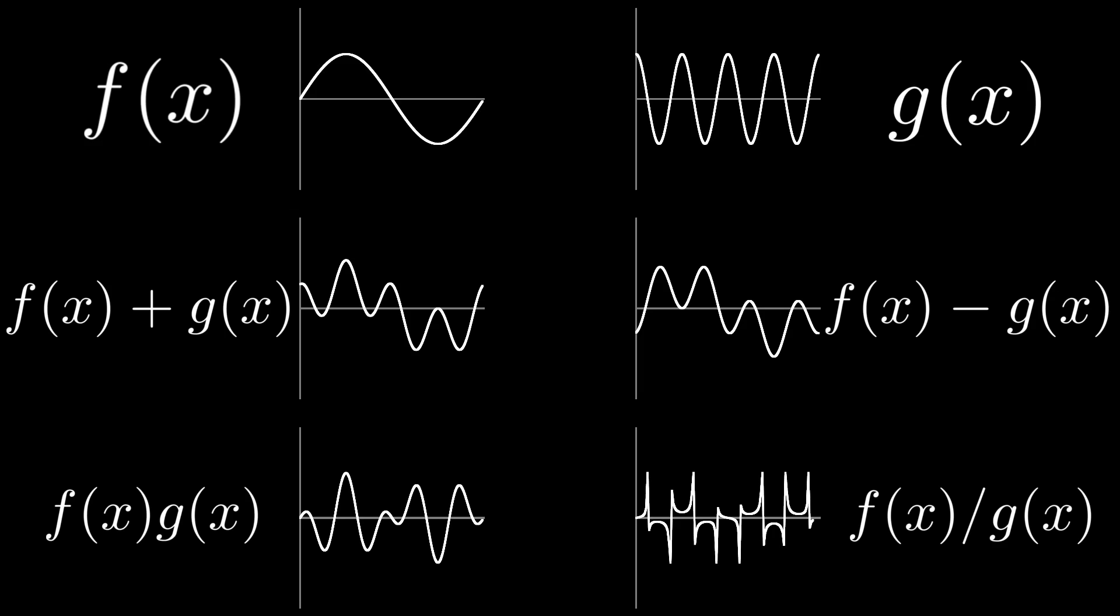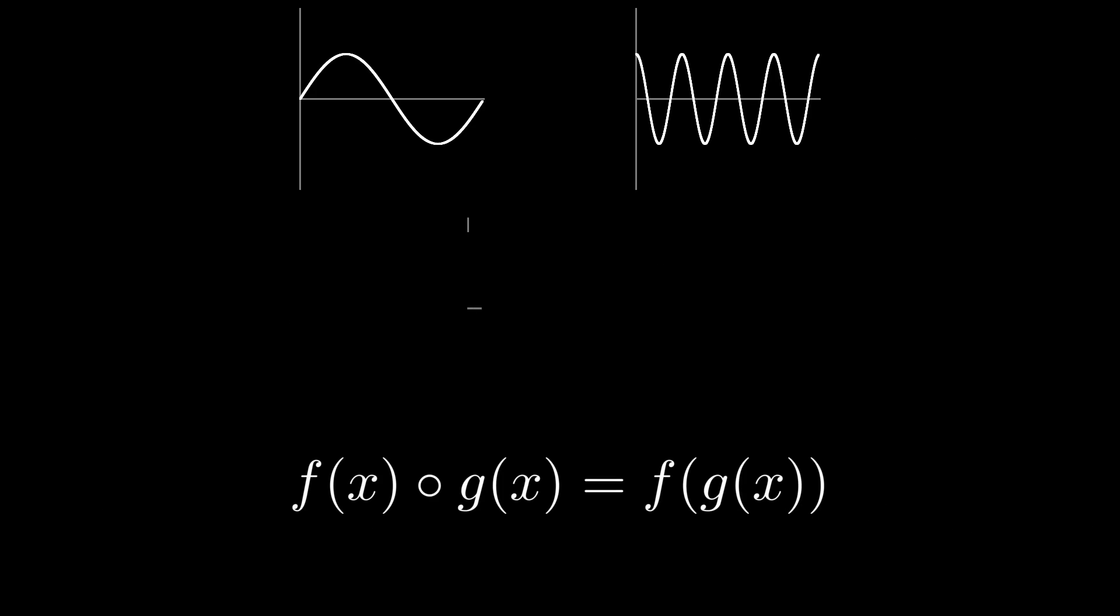But then there are methods meant specifically to combine functions that cannot be explicitly used on traditional numbers. One such example is a composition where you basically plug the output of one function into another.